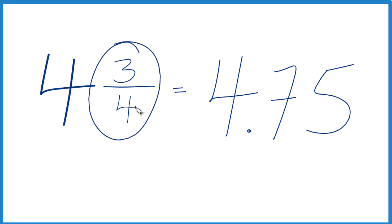But if you don't know that 3/4 is .75, you could divide 3 by 4. That would get 3/4 to a decimal. So let's do that.